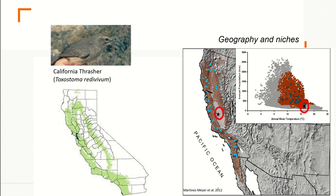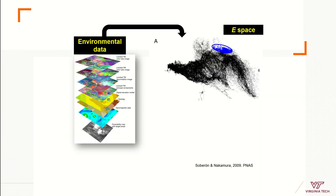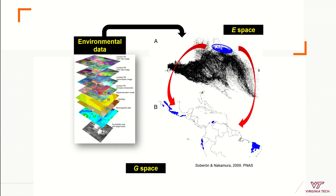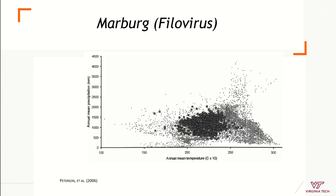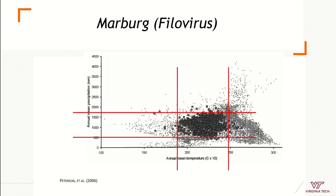The central portion in geographic space is not occurring in the central portion of environmental space. Taking these ideas into account, we need to understand how we collect information in environmental dimensions, which we then project to maps to make interpretations of the potential distribution of an infectious disease.